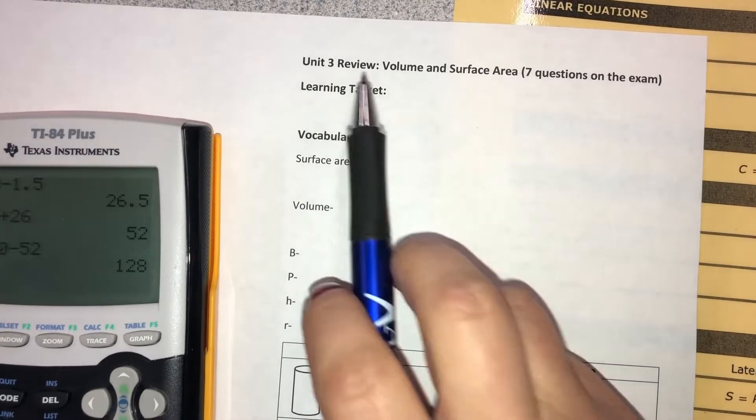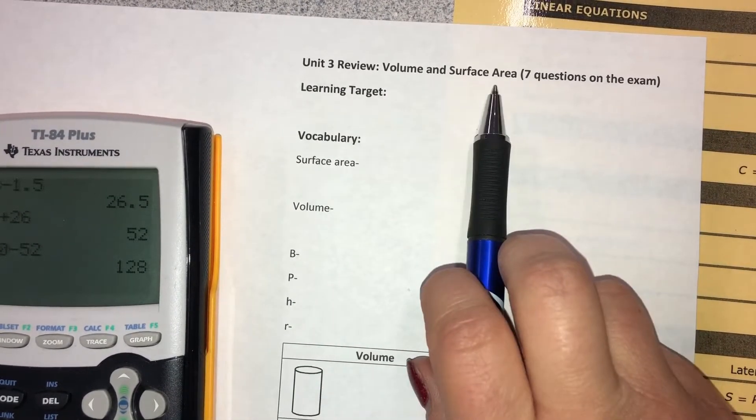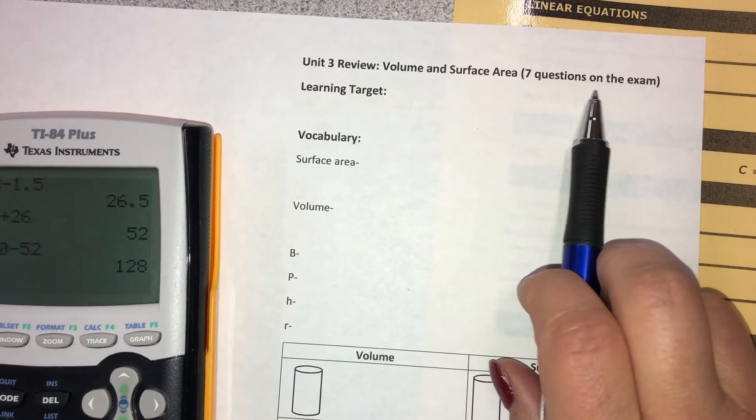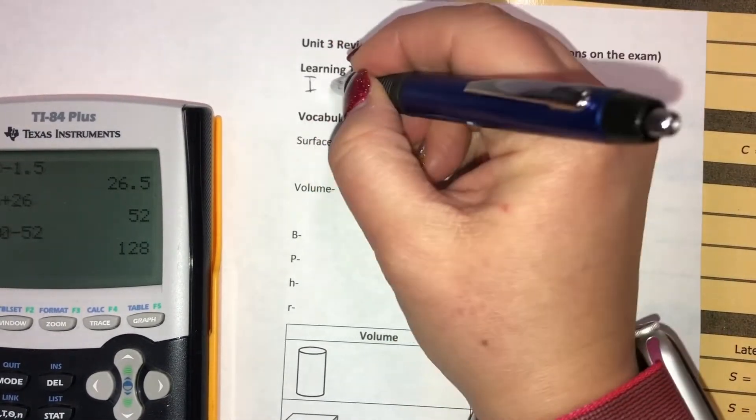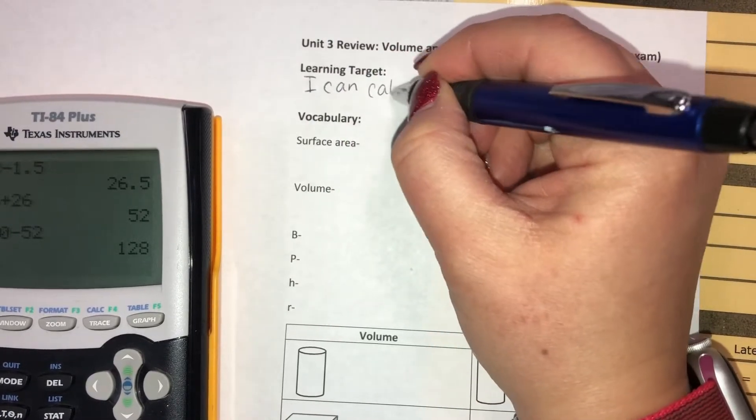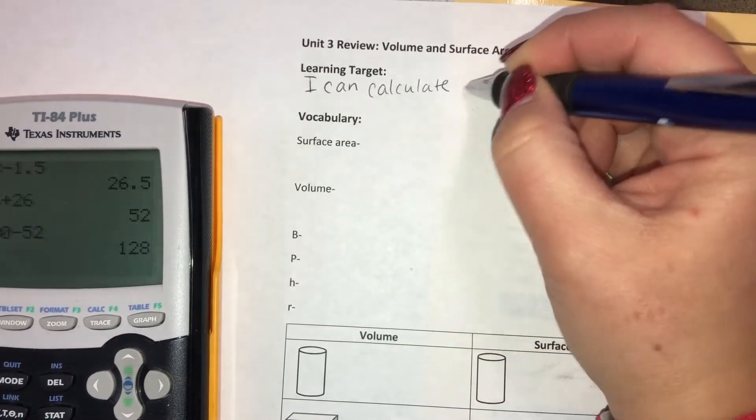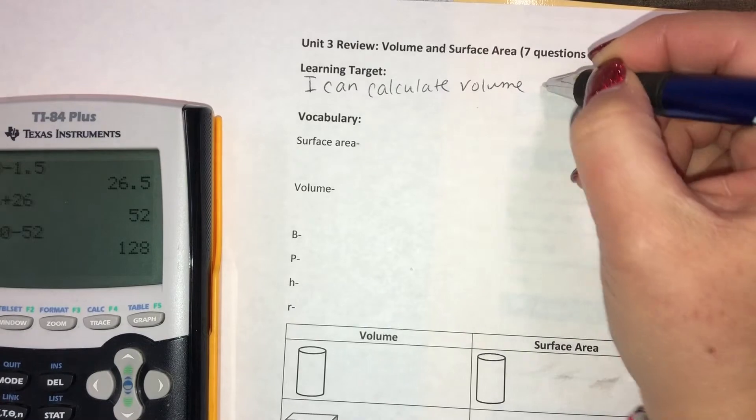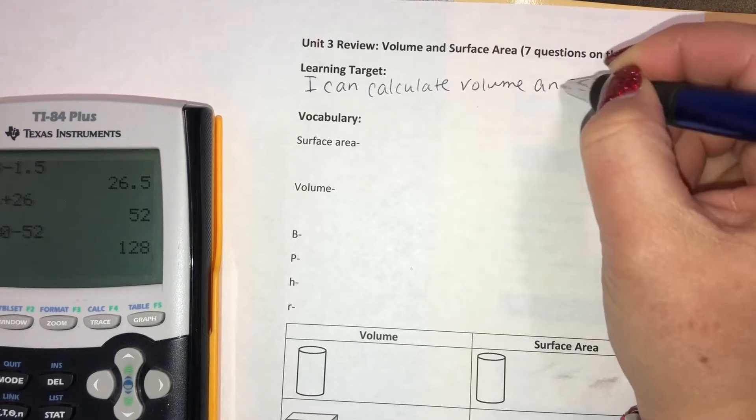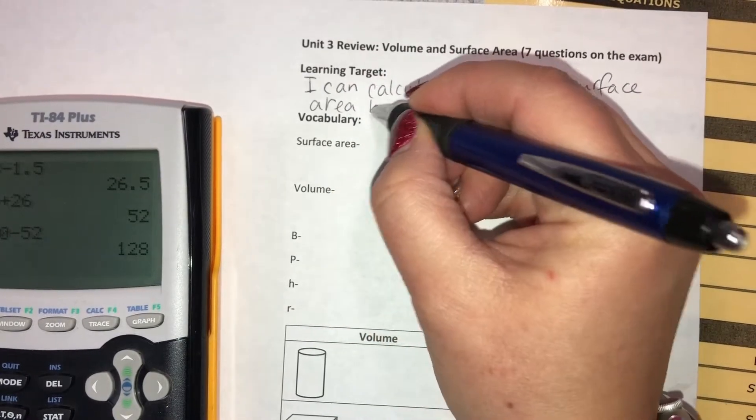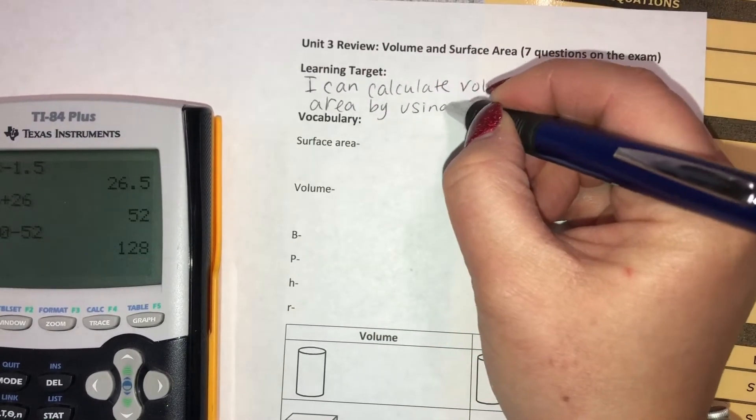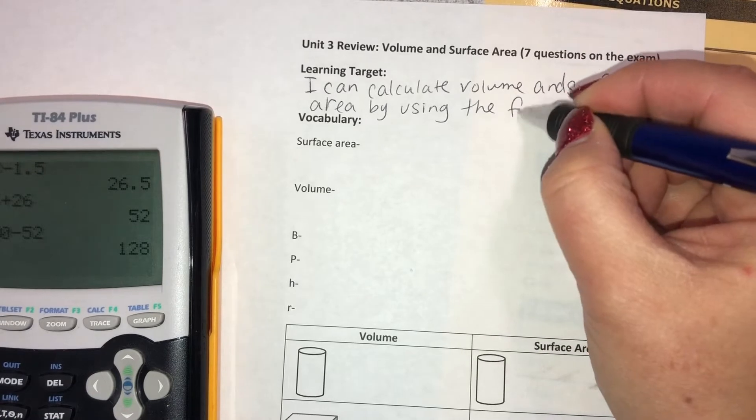Alright, here we go with Unit 3 review. Unit 3 is about volume and surface area, and there will be seven questions on the exam about that. Our learning target is I can calculate volume and surface area by using the formulas.